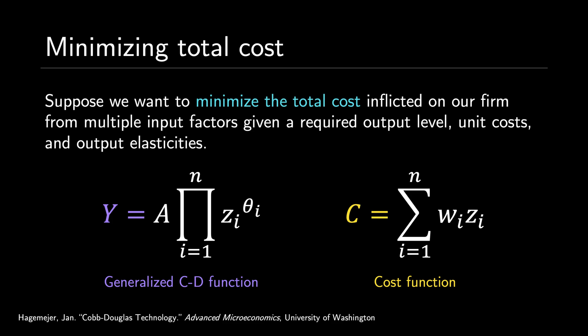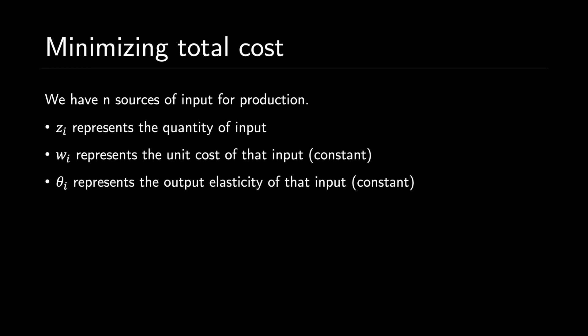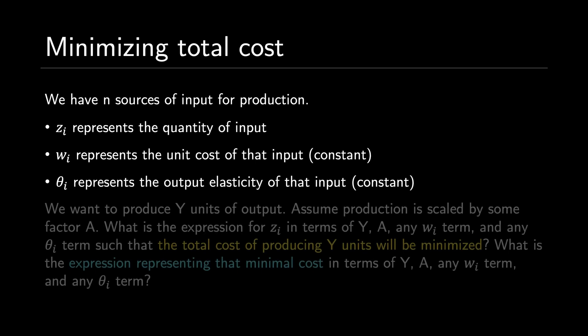We also define total cost as c equals the sum from i equals 1 to n of w sub i times z sub i, where we sum the products of each unit cost by the number of units of input. Our question is: given n sources of input where z sub i is the quantity of input, w sub i is the unit cost, and theta sub i is the output elasticity — all w sub i and theta sub i terms being constant — what is the expression for z sub i in terms of y, A, any w sub i term, and any theta sub i term, such that the total cost of producing y units is minimized?